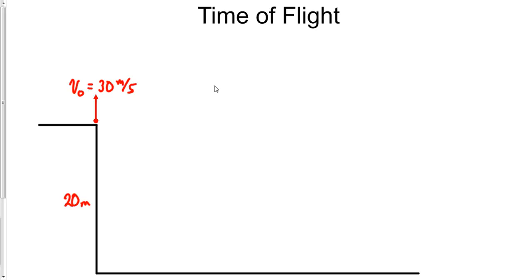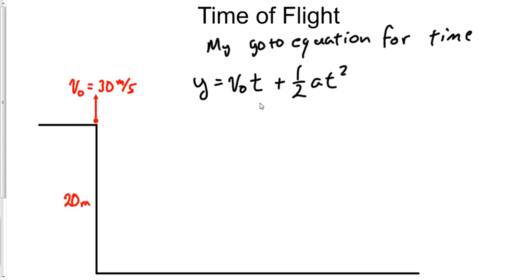Here's what I'm going to do. I'm going to find this time first. If you've watched any of my videos, I'm going to tell you, what is my go-to equation for time? My go-to equation for time is the second equation: y = v₀t + ½at².